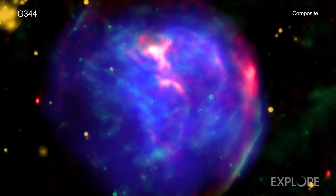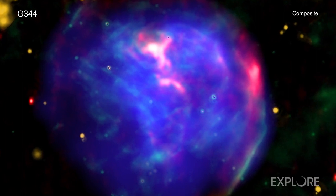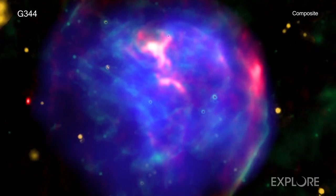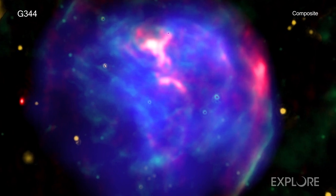The supernova remnant G344.7-0.1 is useful to study because astronomers think it is about 3,000 to 6,000 years old in Earth's time frame.